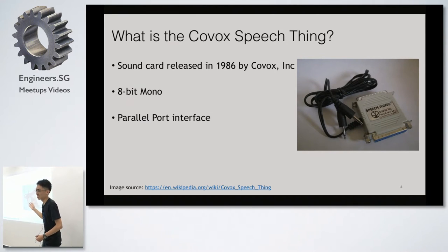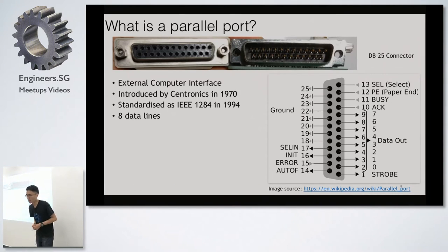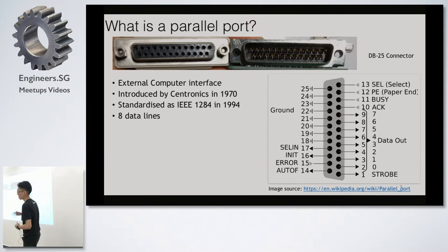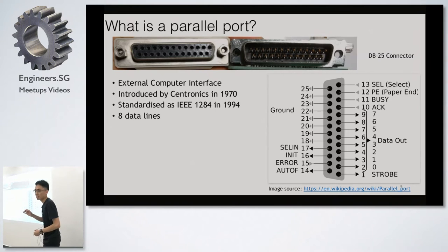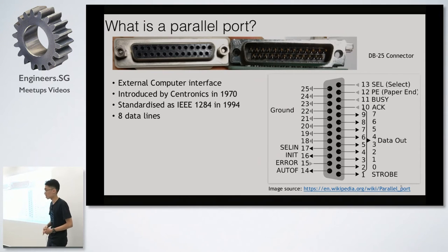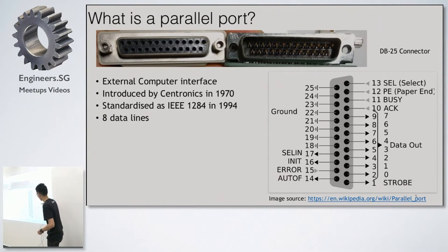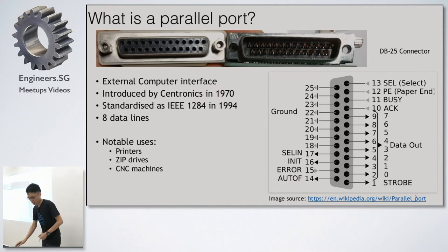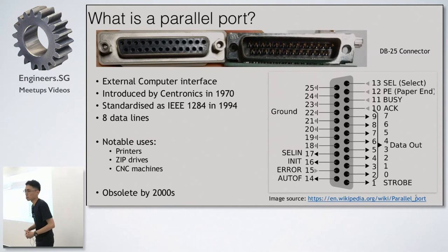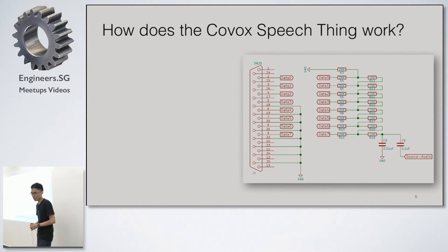It uses the parallel port interface because this is such an old sound card — there was no USB at that time. USB only came out in 1996, so this is a legacy connector. A parallel port is a very old port that came out in 1970, originally used for printers by the Centronics company. It was also used for Zip drives and CNC machines. We don't see parallel ports today because they've been replaced by USB.